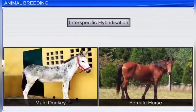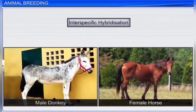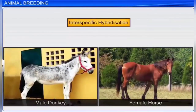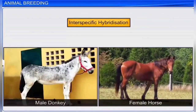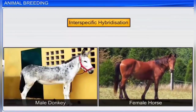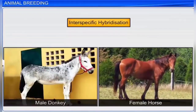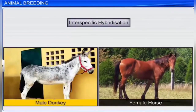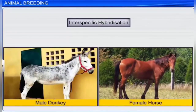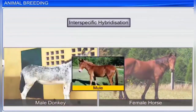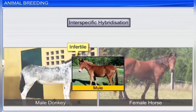The third type of outbreeding is inter-specific hybridization, where animals of two different species are mated. For example, mating a male donkey with a female horse produces a mule. Although most new breeds from inter-specific hybridization are infertile, they have high economic value.